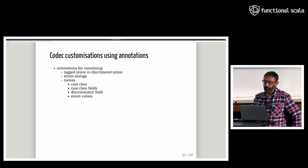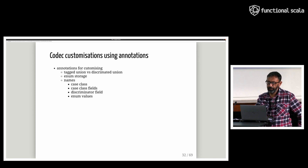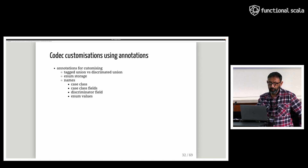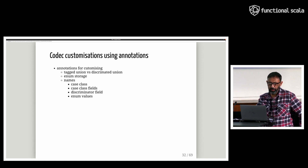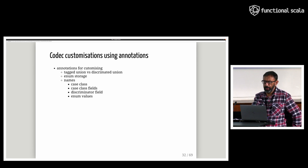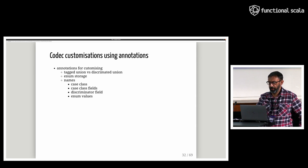As consumers of ZIO Schema, we are pioneers of using annotations to customize behavior of our automated codecs. You can see here we can switch our representation in the database between tagged unions and discriminated unions. We can also switch the way we store enums, and change the way names in case classes, case class fields, discriminator fields, and enum values are stored. Note that annotation names we use will be changing to align with standard annotation names that have come in the new version of ZIO Schema.